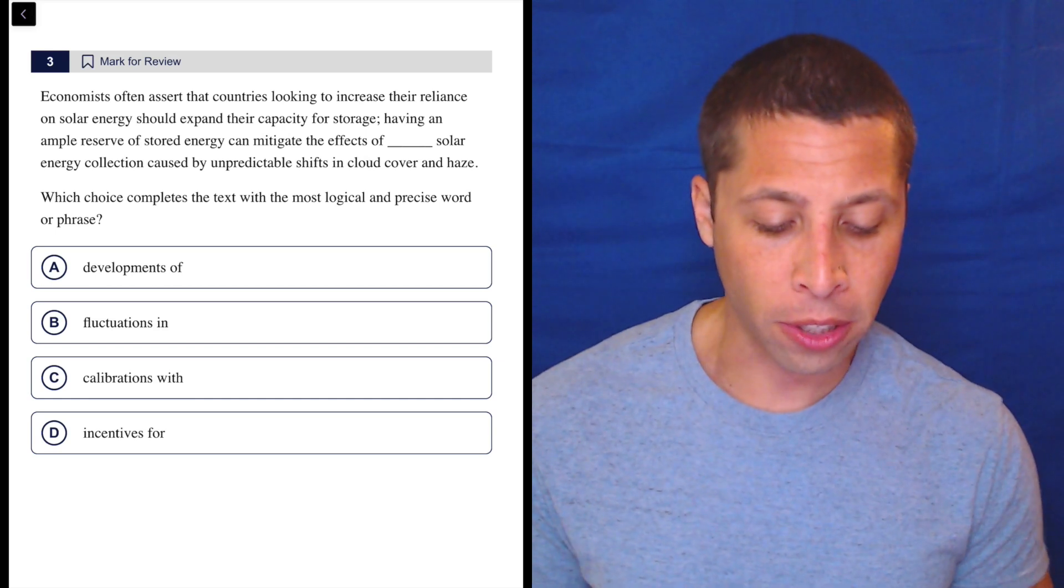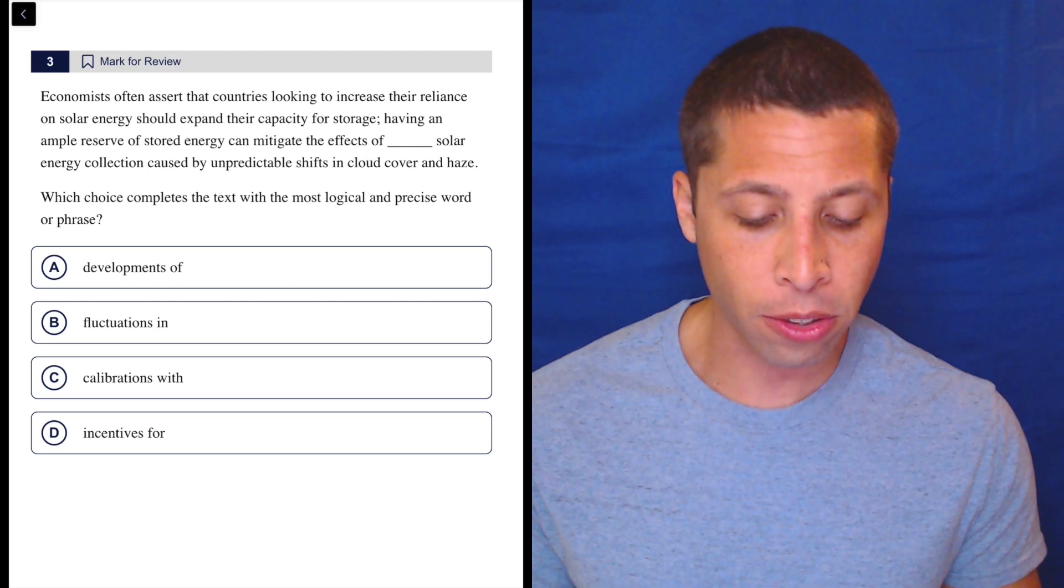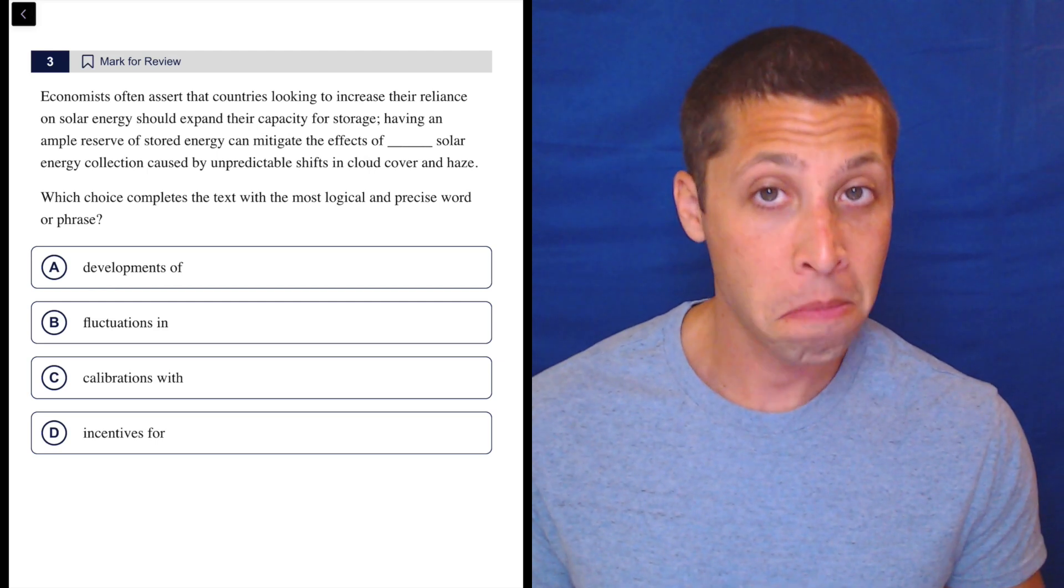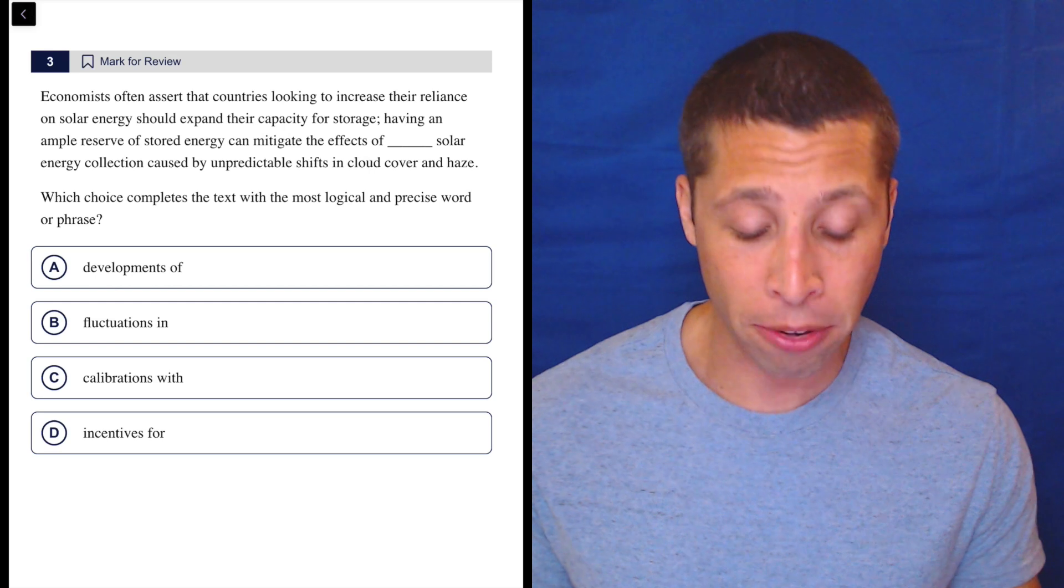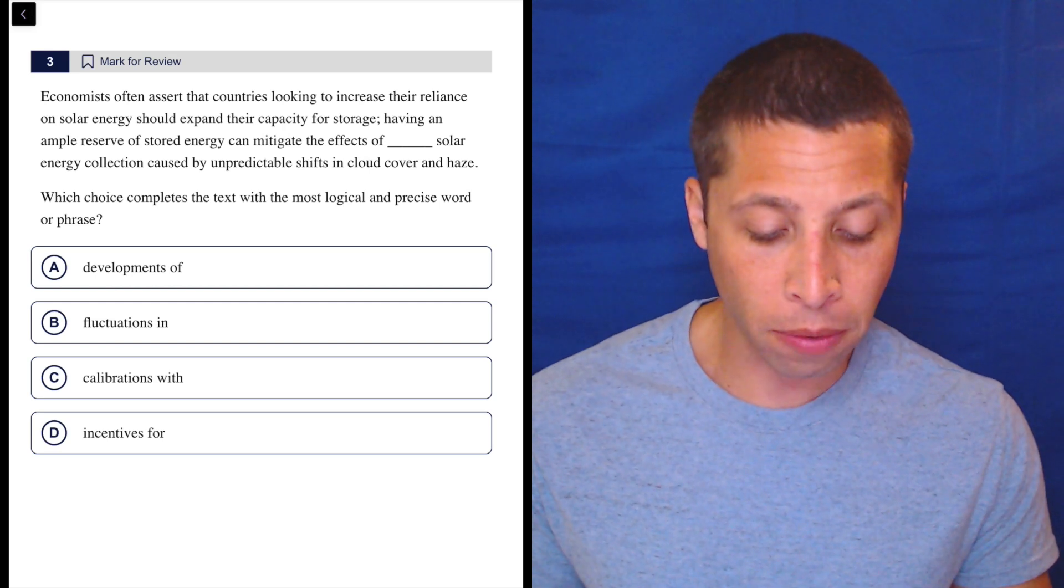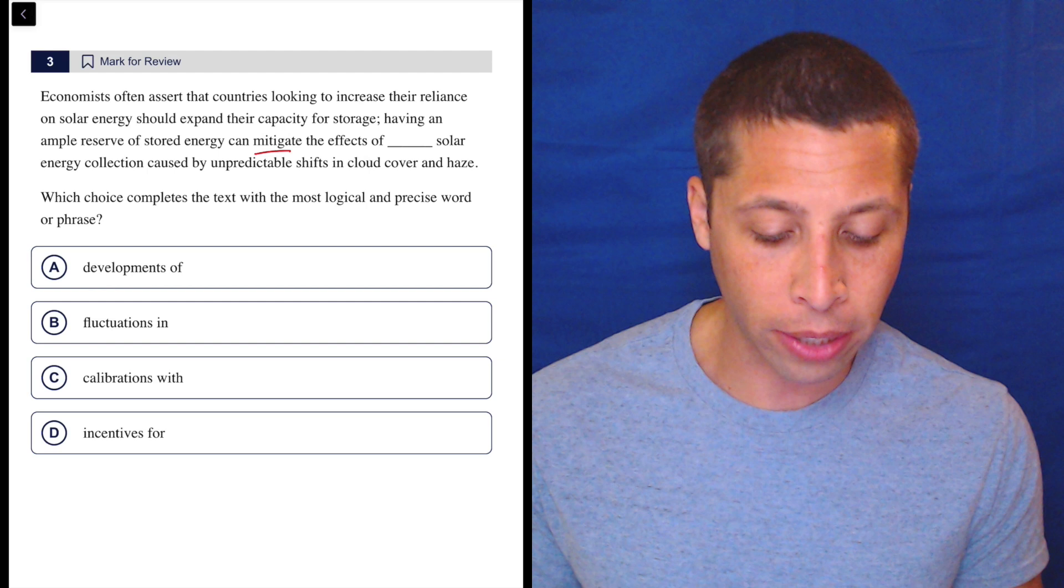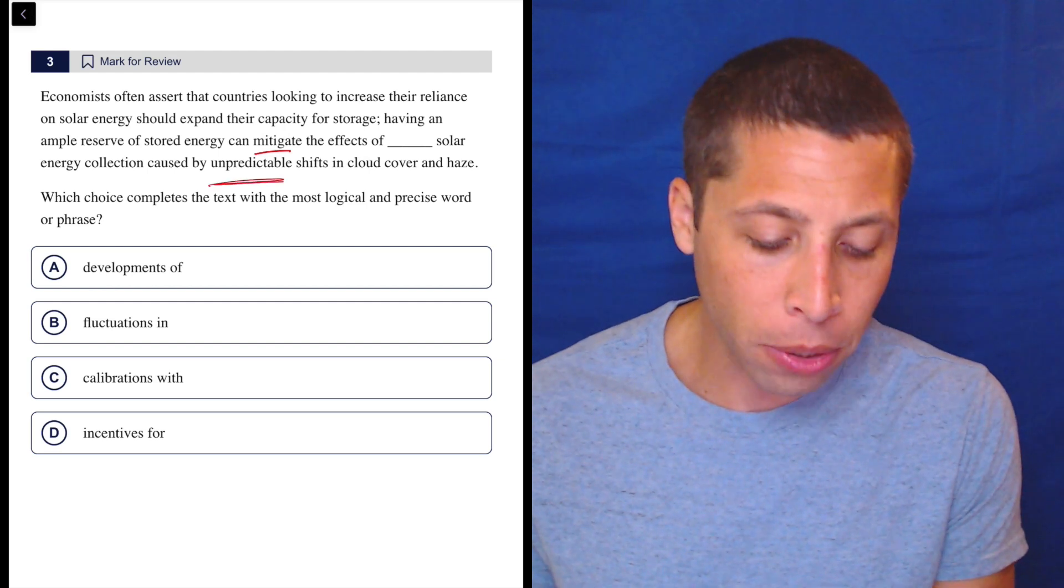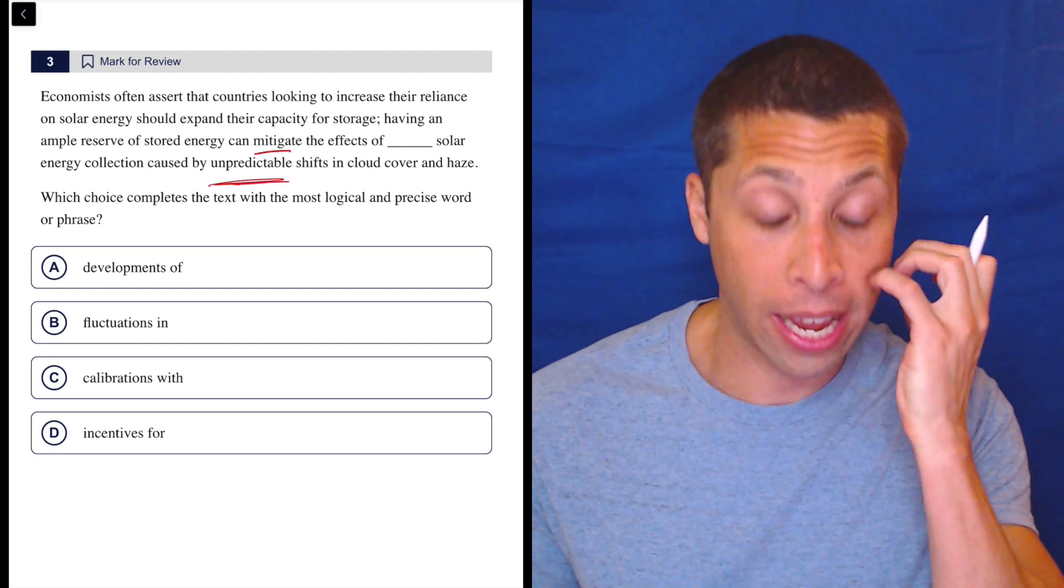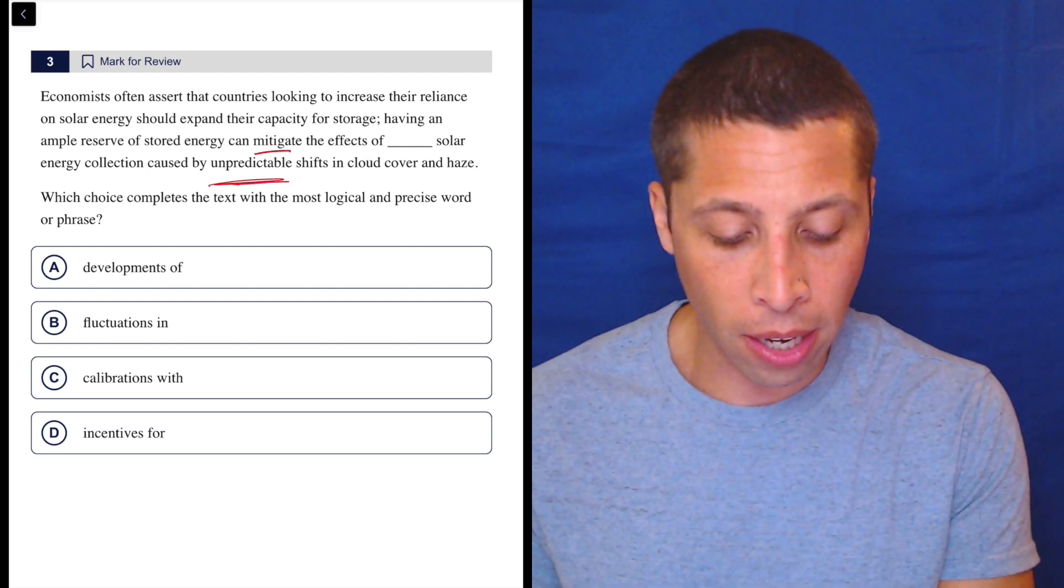Economists often assert that countries looking to increase their reliance on solar energy should expand their capacity for storage. So far, nothing really jumps out to me. Having an ample reserve of stored energy can mitigate—that's a good word to know—the effects of blank solar energy collection caused by unpredictable shifts in cloud cover and haze.